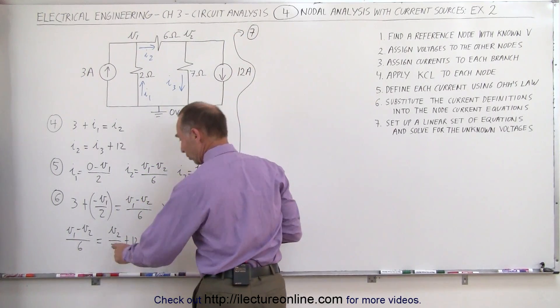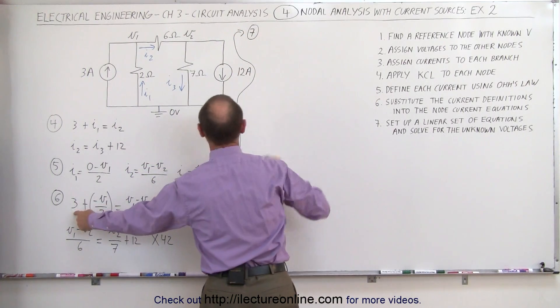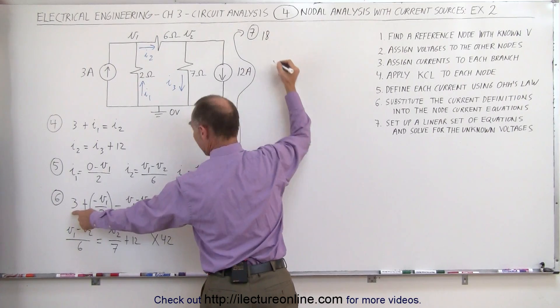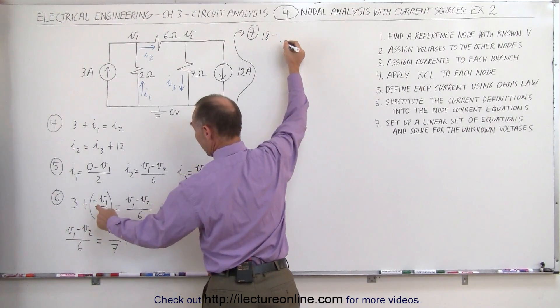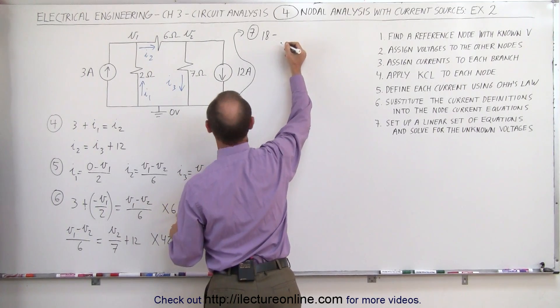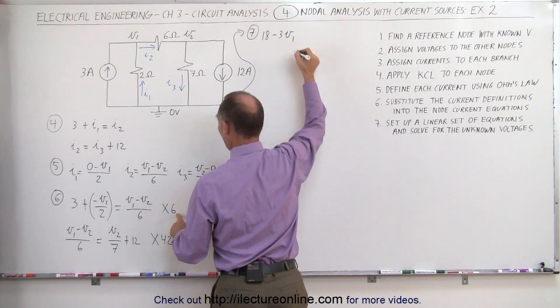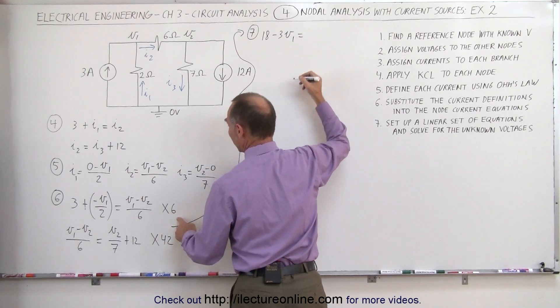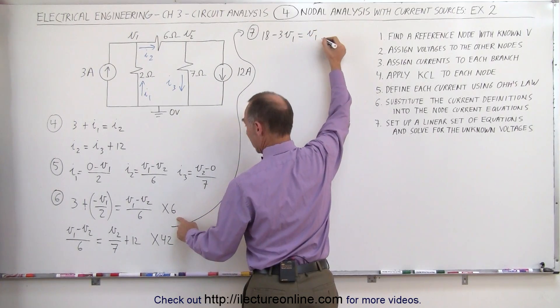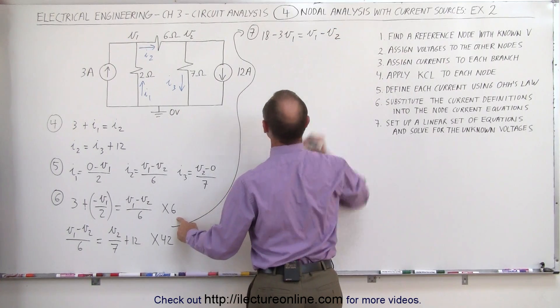Step number 7, our first equation will multiply times 6. We get 18 plus, or actually minus, right, that's minus. 2 goes into 6 three times, that's 3 times V1 equals 6 divided by 6 is 1, so we get V1 minus V2 for the first equation.